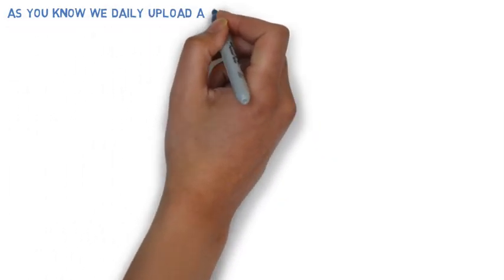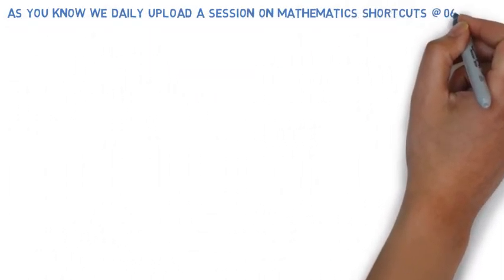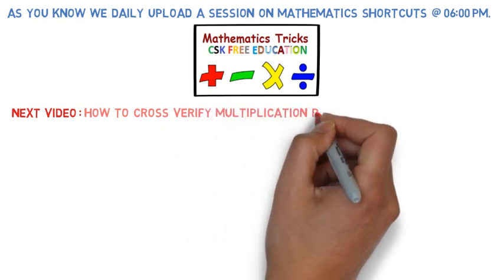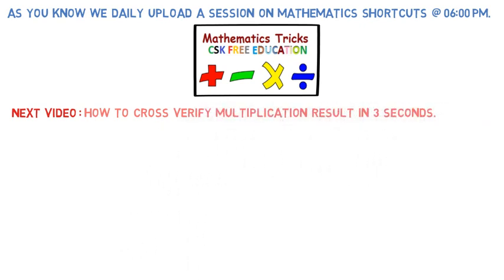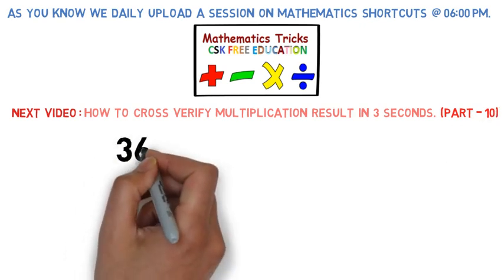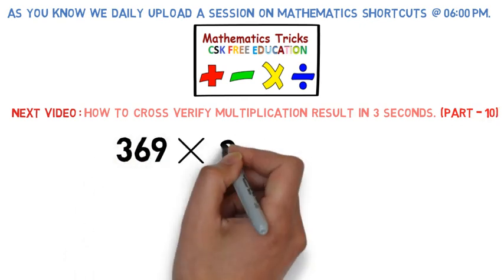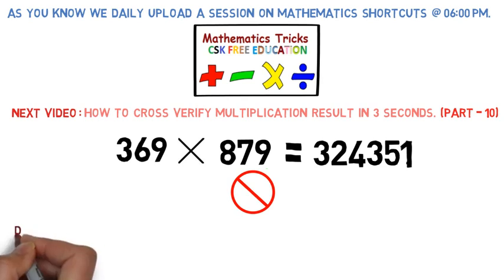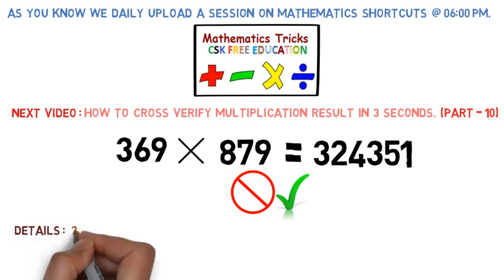As you know, we daily upload a session on Mathematics Shortcuts at 6 pm in Animated Way. In the next video I'm going to teach you how to cross verify multiplication result in just three seconds, which is shortcut multiplication part 10. For example, you got a number, let's say 369, and you multiplied this by 879 and the result comes out to be 324351. How do you test if this is correct or not? We'll have a look about this in the next session.